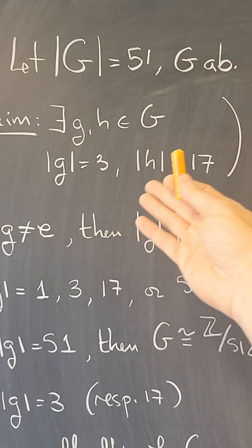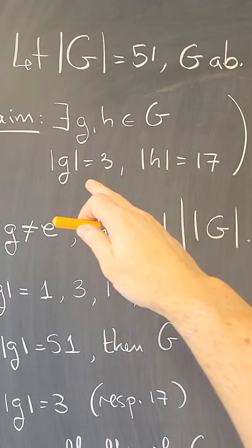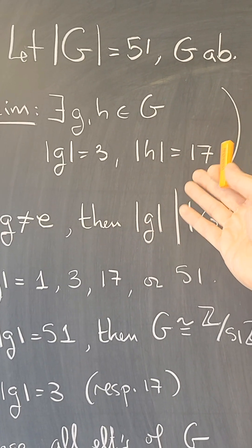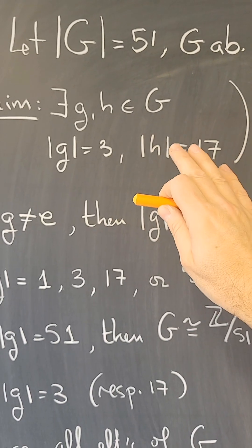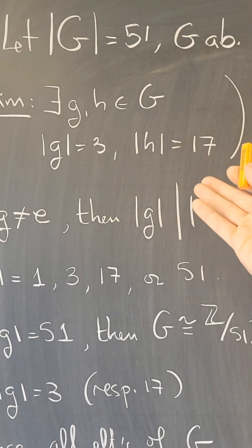Now the existence of those elements will actually follow from something called Cauchy's theorem, but let's not assume that and actually prove that such elements have to exist also as an example of Cauchy.